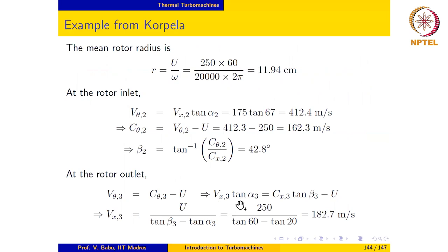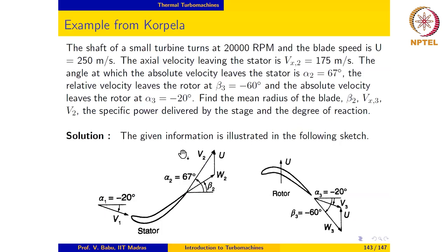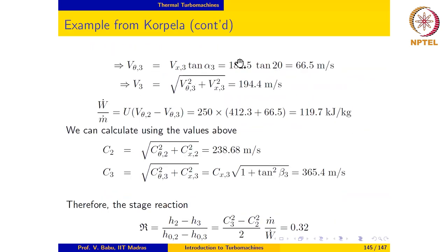At the rotor outlet, which is here, v-theta-3—notice that this is v3 equal to c-theta-3. So c-theta-3 would be this entire segment. So c-theta-3 minus u would be equal to v-theta-3. So v-theta-3 equals c-theta-3 minus u. And v-theta-3 is nothing but vx3 times tan alpha3. c-theta-3 is cx3 times tan beta3. Eliminate or rewrite this expression. Notice that cx3 is equal to vx3. So if I rewrite this, then I get vx3 to be u over tan beta3 minus tan alpha3. And this gives me vx3 to be equal to 100.